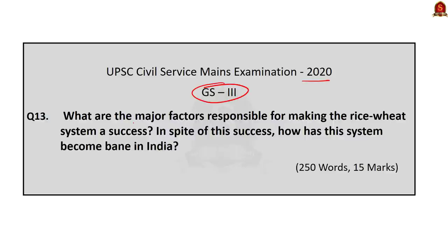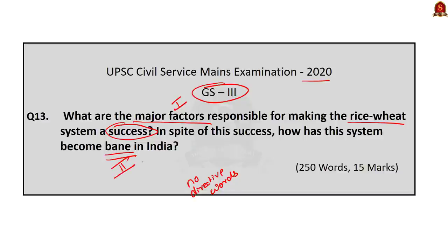The question is: What are the major factors responsible for making the rice-wheat system a success? In spite of this success, how has this system become a bane in India? This is a very direct question with no difficult directive words. The question has two parts: first, focus on the factors that made the rice-wheat system a success; second, focus on how the rice-wheat system is bad for India.